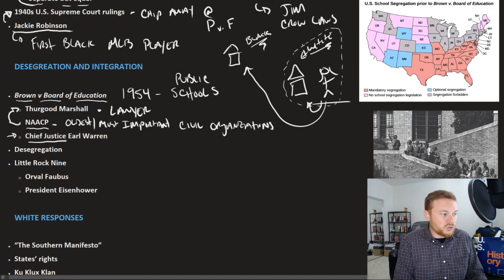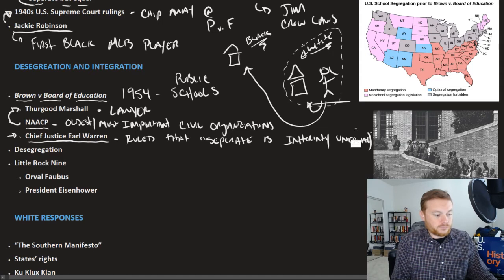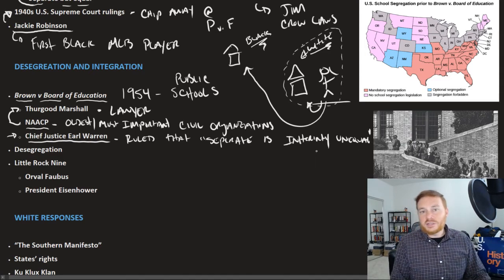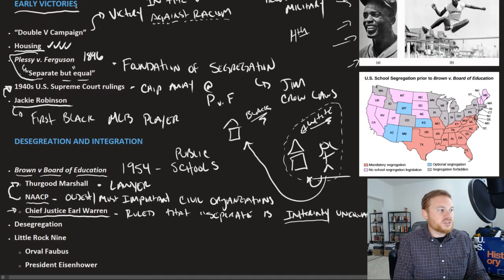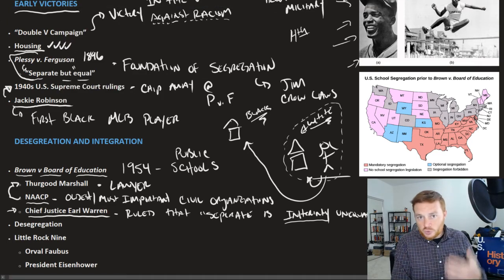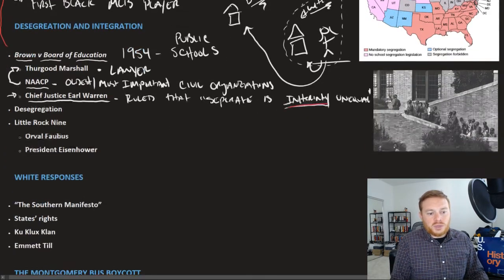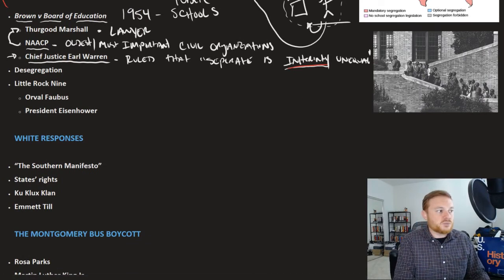Chief Justice Earl Warren ruled that separate is inherently unequal — that separate but equal is a violation of the 14th Amendment because separate is inherently unequal. The significance of Brown v. Board is that even though the case originated with schooling, it struck down Plessy v. Ferguson and the idea of separate but equal entirely. This was probably the most significant legal victory that the civil rights movement could ask for.